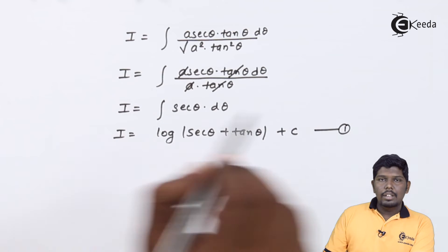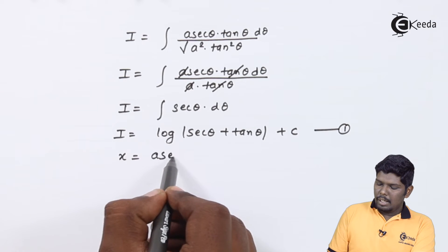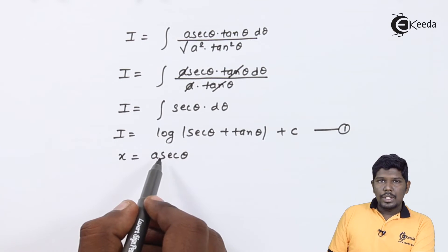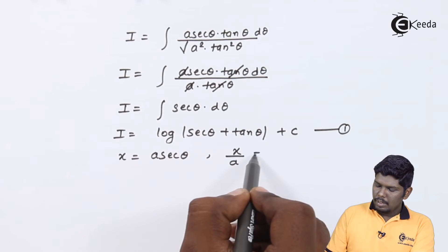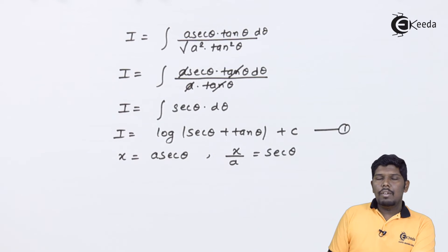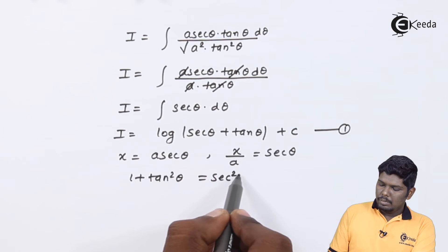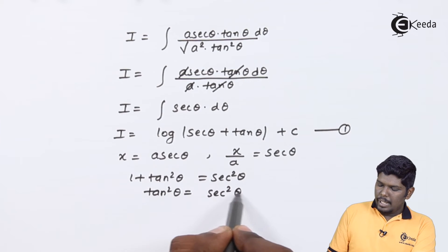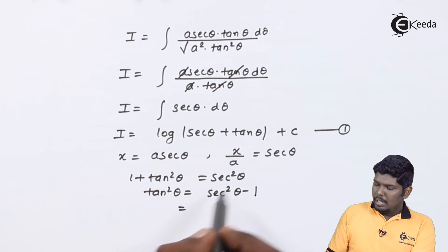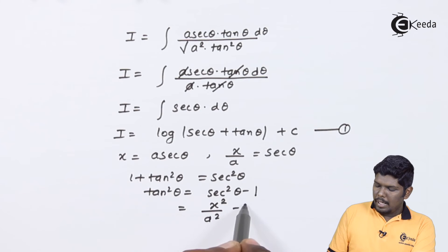Considering this as equation number 1, we had substituted x as a sec theta. Therefore, from this equation we can first get the value of sec theta: x upon a equals sec theta. Now to get the value of tan theta, we can use the identity 1 plus tan squared theta equals sec squared theta. So tan squared theta equals sec squared theta minus 1, and since sec theta is x by a, sec squared theta will be x squared upon a squared minus 1.